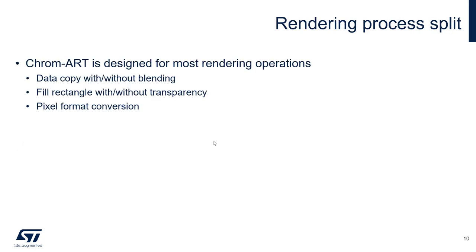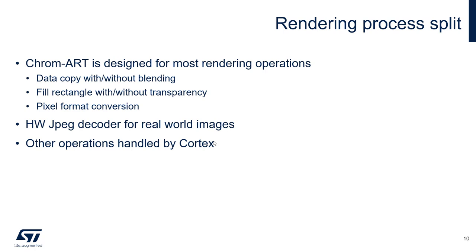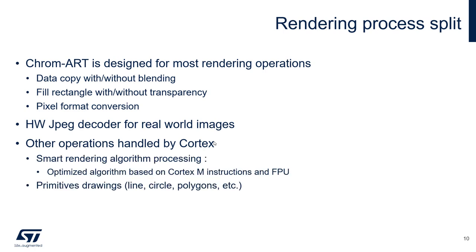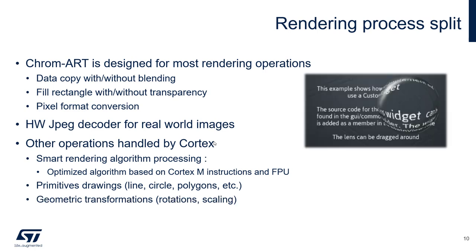In summary, the rendering process is as follows: ChromArt handles most rendering operations — data copy with or without blending, data fill rectangle with or without transparency, and pixel format conversion. The hardware JPEG decoder handles decoding and encoding of JPEG images. All other operations are handled by the Cortex, including smart rendering processing, the algorithm determining which zone of the frame buffer needs refreshing, primitive drawing such as circles or polygons, and geometric transformations such as rotations or scaling. Advanced color effects are also handled by the Cortex.